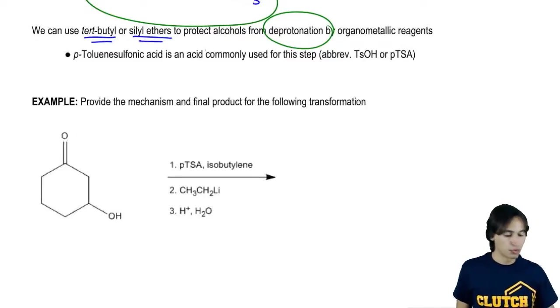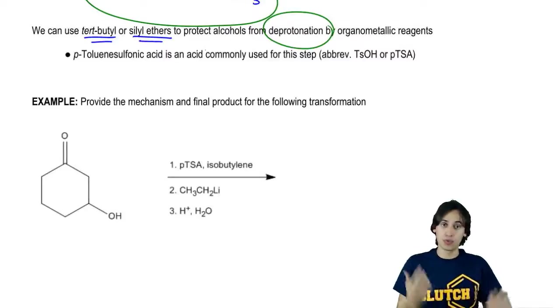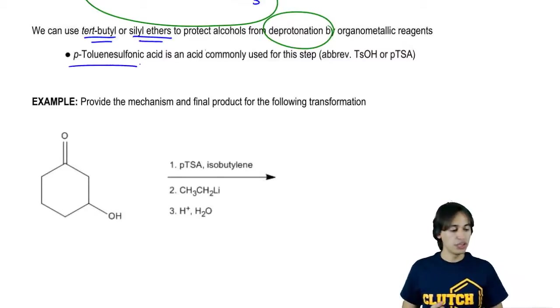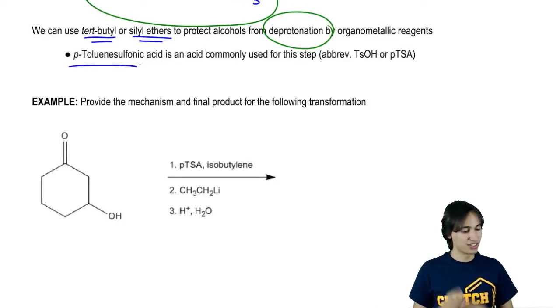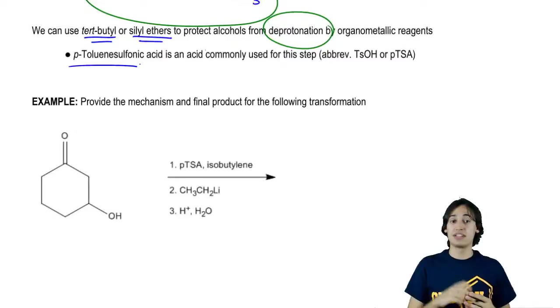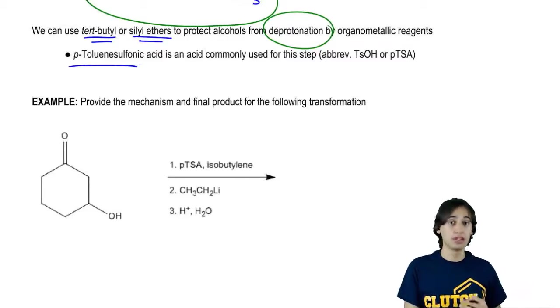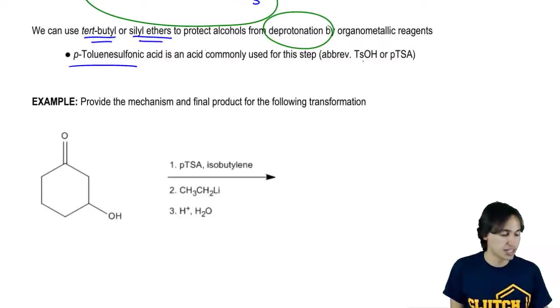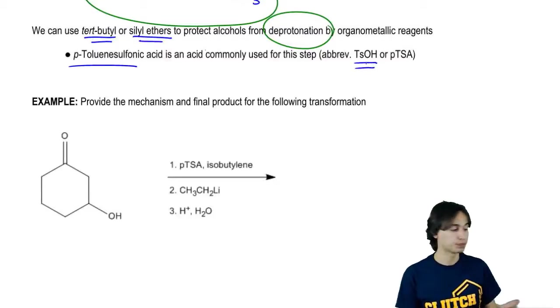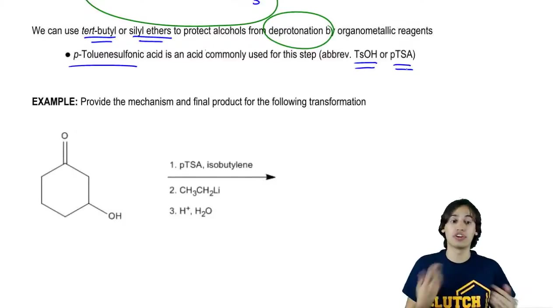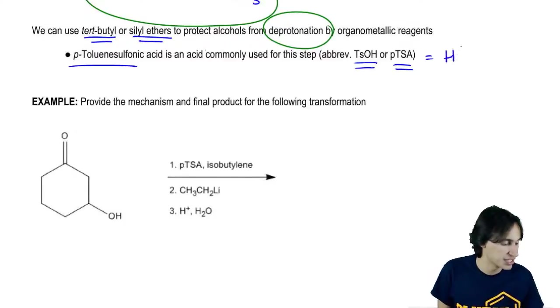Just so you know, a really common acid that's used for protection is paratoluene sulfonic acid, which is kind of a long name, but it's actually very common in your book, and it's usually abbreviated. Instead of spelling it all out, they usually say it's TsOH or PTSA. Either way, just know that they're a source of H+, because this is an acid.